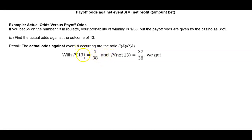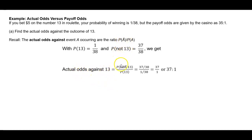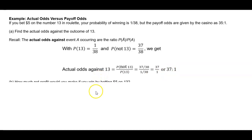The probability of event 13 occurring is 1 out of 38. The probability of the complement — not getting a 13 — would be all the other choices out of 38, which is 37 over 38. So the actual odds against 13 equals (37/38) divided by (1/38). Since both denominators are 38, they simplify, and you end up getting 37 to 1. Therefore, the actual odds against the outcome of 13 are 37 to 1.